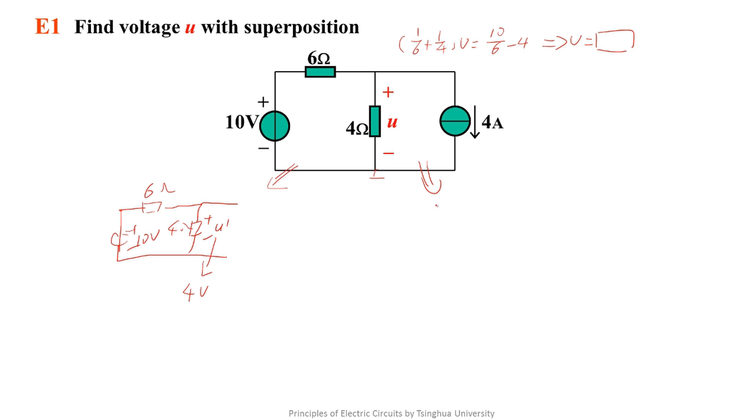If the current source takes effect alone and the voltage source doesn't, then this is a current divider circuit. According to the current division equation, we get the current is 4 times 0.6 equals 2.4 ampere. Then we get U' is minus 4 times 2.4 equals minus 9.6 volts. Then we know that U equals 4 minus 9.6 equals minus 5.6 volts.